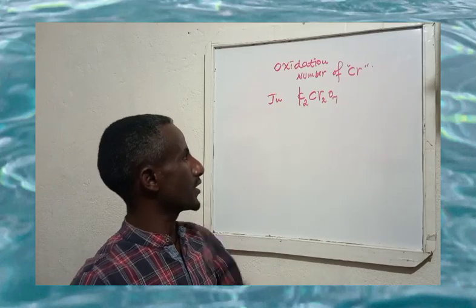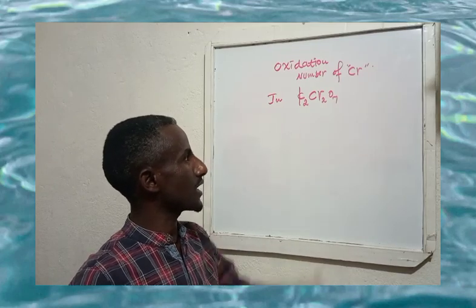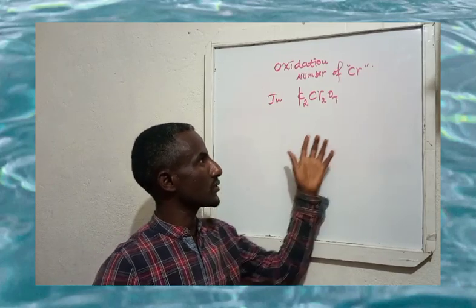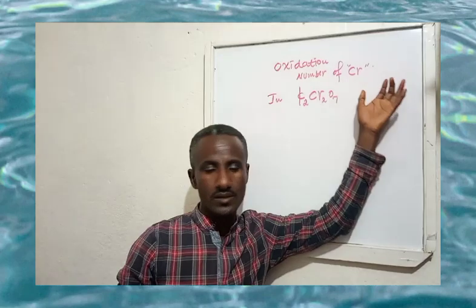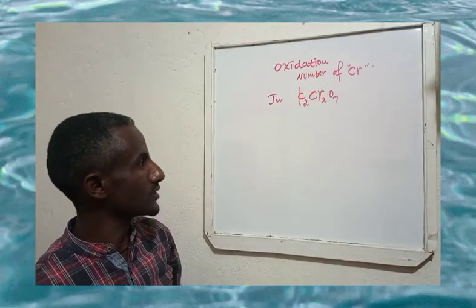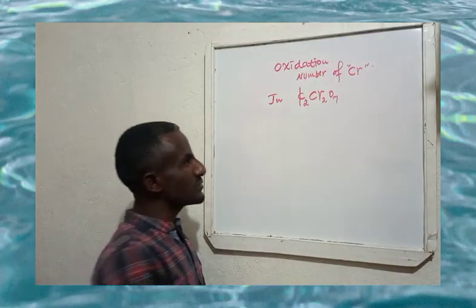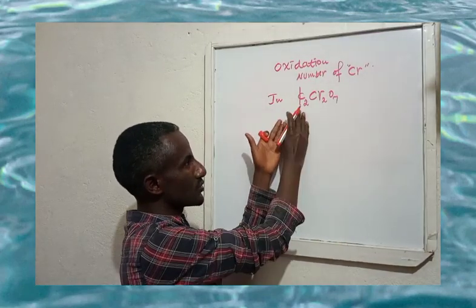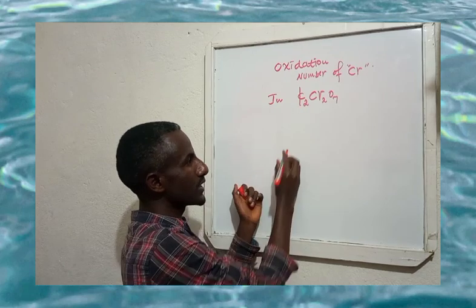Oxidation number of chromium in potassium dichromate — how we can calculate the oxidation number of chromium in this compound.